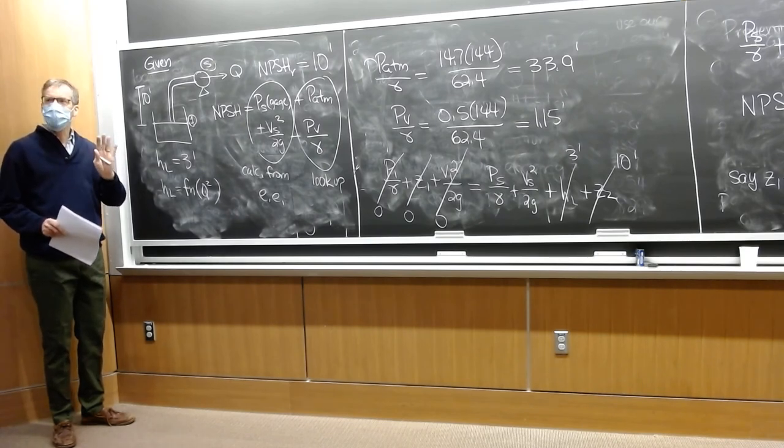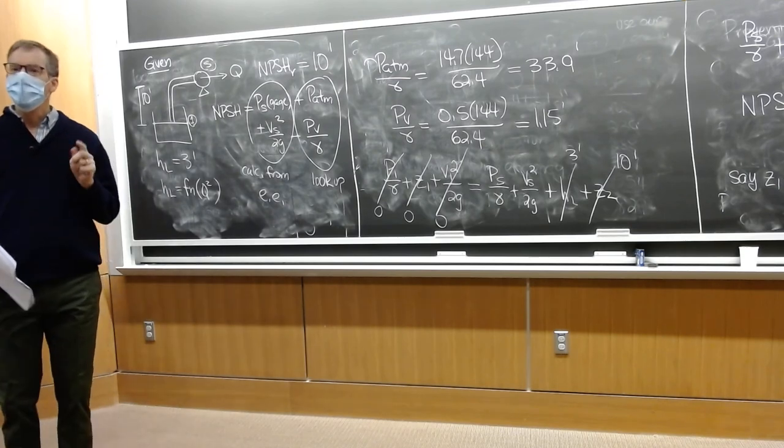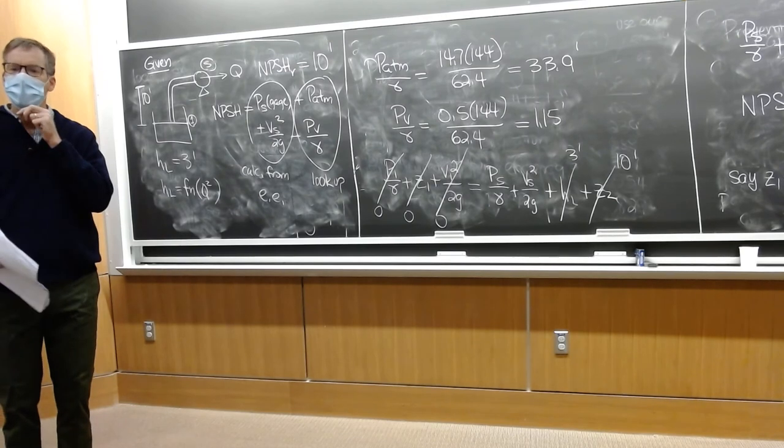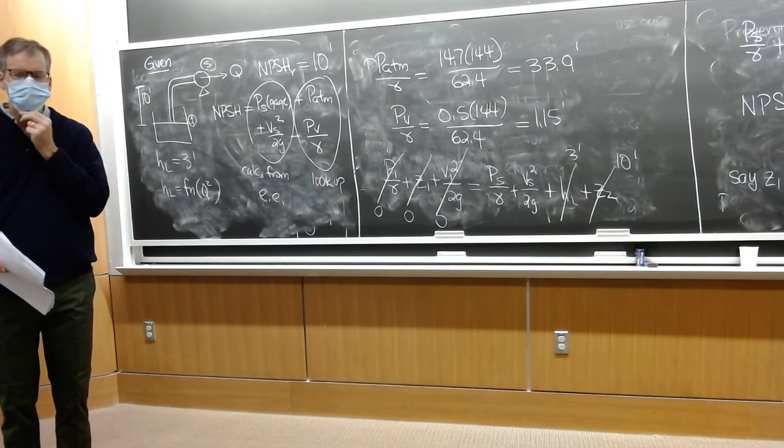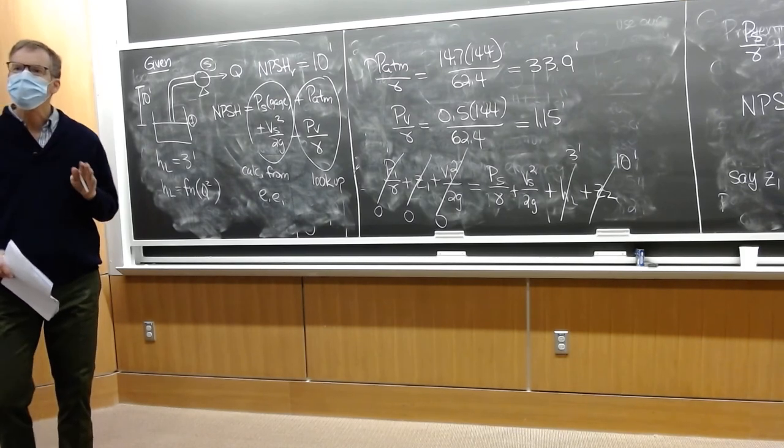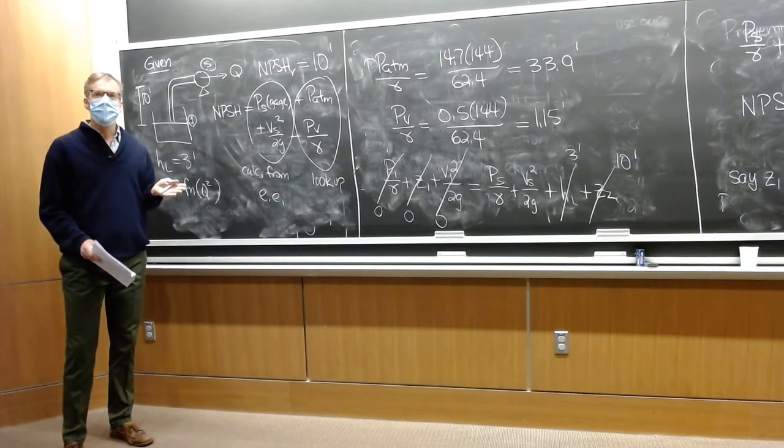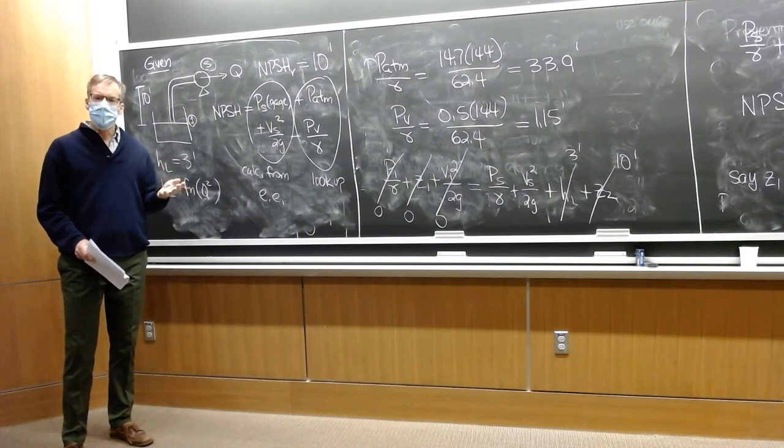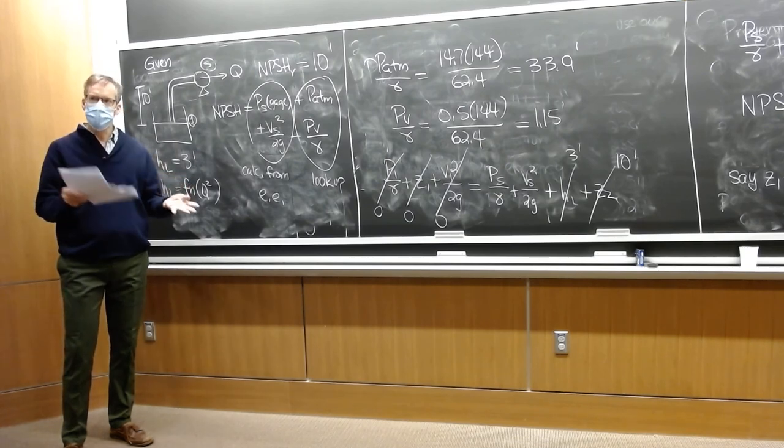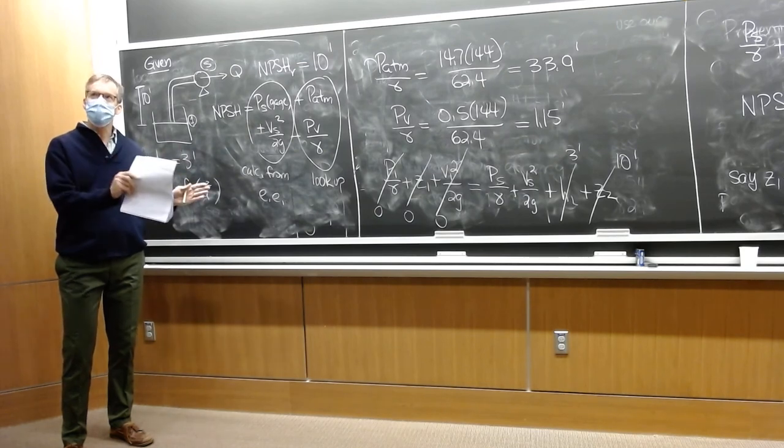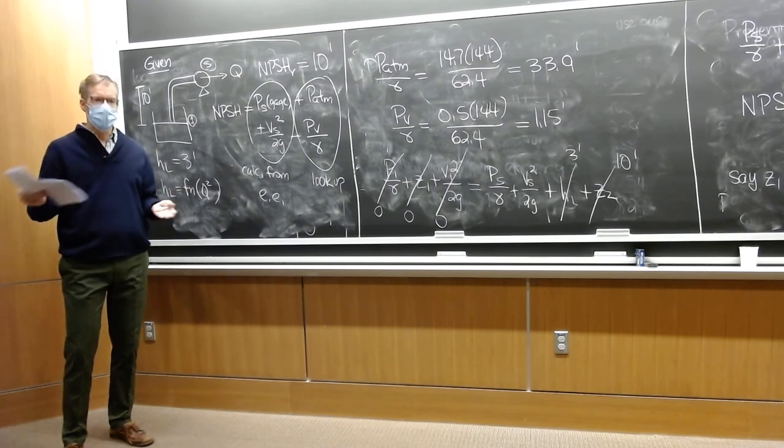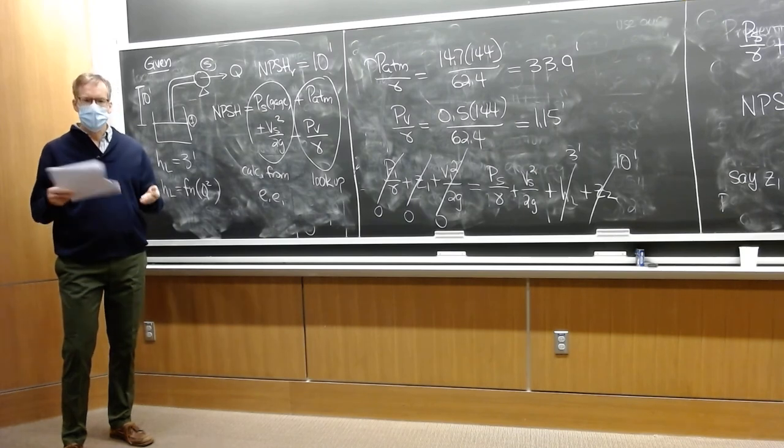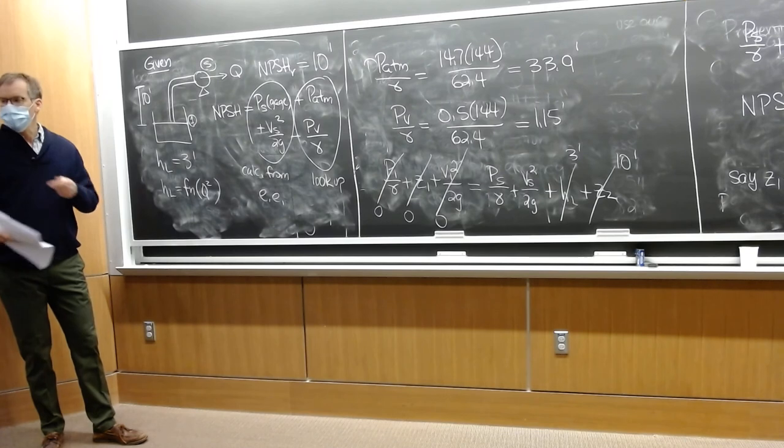There's one more topic that we're not going to get to. It's only a couple of pages in my notes and there is the online lecture. I believe there's a homework problem on it called the specific speed of a pump, which is a dimensionless number you can calculate to decide if, given your conditions, whether a radial pump or a mixed flow pump or an axial flow pump is preferred for your situation. So look at those notes or read the text and you'll get some practice with the homework problems. We'll end it there.